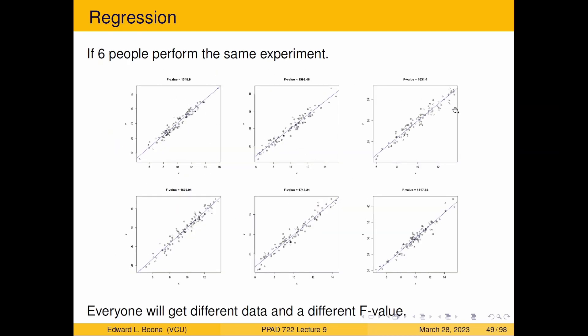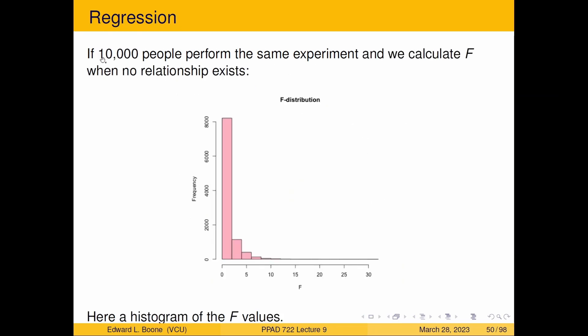So suppose six people perform the same experiment. They're going to get different data sets and they're going to get different F values. And we want to look at the sampling distribution of the different F values when there's no relationship in the data. So if 10,000 people were performing this experiment and calculate their F when no relationship exists in the data, this is our null hypothesis. We would get an F distribution and this is a histogram of those 10,000 experiments done.